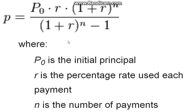So for this function, as you can see here, P is the amount you'd have to pay for each payment. P sub 0 is the initial principal, or the initial amount that the loan was taken out on. So say you take out a loan for $1,000 — P sub 0 is that $1,000. That times the rate,